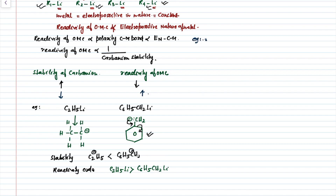Example number two: suppose you have (A) C6H5CH2Li (monophenyl), then (B) (C6H5)2CHLi (diphenyl), then (C) (C6H5)3CLi (triphenyl). Which one is more reactive? For this we will again check the stability of the carbanion. When we ionize these compounds, we get the corresponding mono-, di-, and triphenyl carbanions.